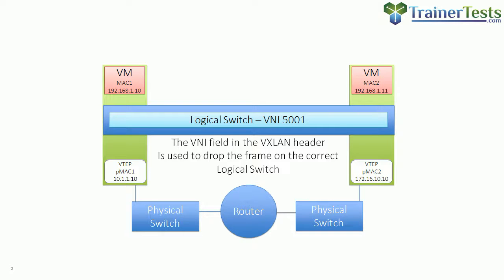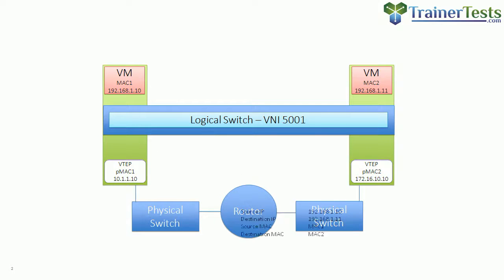The VNI field in the VXLAN header is used to drop the frame onto the correct logical switch. At that point, all the outer headers that VXLAN inserted are stripped away, and the frame looks exactly the same as when it left the source virtual machine — source IP is the source VM, destination IP is the destination VM, source MAC is the sending VM, and destination MAC is the receiving virtual machine.